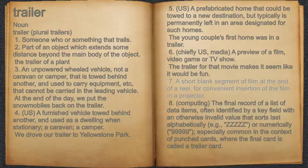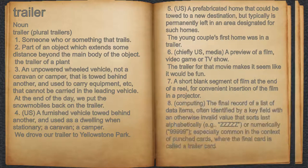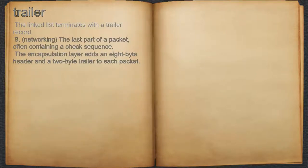7. A short blank segment of film at the end of a reel, for convenient insertion of the film in a projector. 8. Computing: the final record of a list of data items, often identified by a key field with an otherwise invalid value that sorts last alphabetically, e.g. ZZZZZ, or numerically, 99999, especially common in the context of punched cards, where the final card is called a trailer card. For example, the linked list terminates with a trailer record.